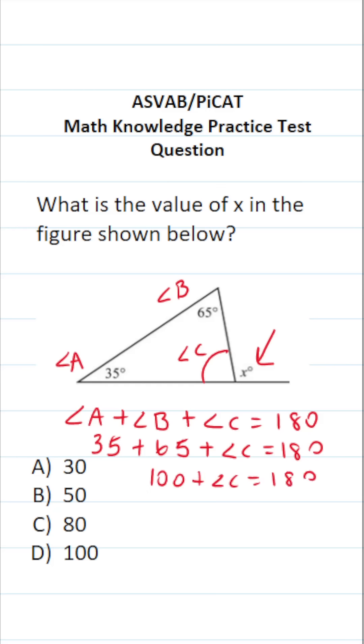And to get C by itself, all we have to do is subtract 100 from both sides. This says the measure of angle C is 180 minus 100, which is 80 degrees. So we know that this angle is 80 degrees.